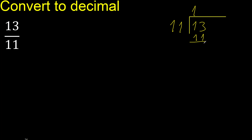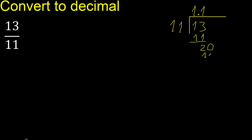13 minus 11 is 2. Next digit — that is not a number, therefore complete. Always complete with 0. Point is here. 0 point. 20. 11 multiplied by 2 is greater, multiplied by 1 is 11. 20 minus 11 is 9.